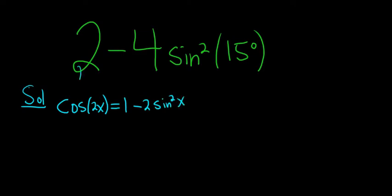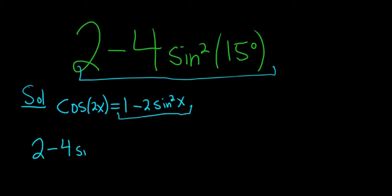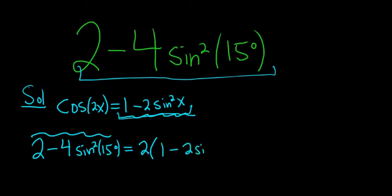We'll start the problem by writing down the original question and then making it look like this identity. So I'll rewrite the original question: 2 minus 4 sine squared of 15 degrees. To make this look like this, we just have to pull out a 2. So 2 parentheses, we need 1 minus 2 sine squared of 15 degrees.